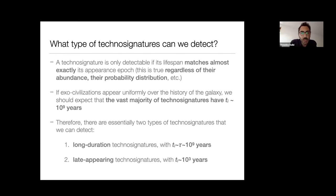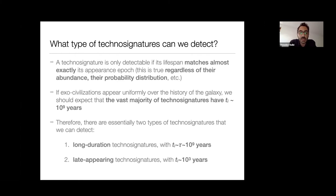Suppose you have some exo-civilizations spread uniformly over the history of the galaxy. Then you should expect the vast majority of technosignatures to have a time of appearance Ti of the order of a billion years or so. Using this filter, you're either getting very long duration technosignatures — with Ti and tau of the same order of magnitude, around 10 to the 9 years — or you are picking up technosignatures that appeared very close to our own appearance, meaning they are coeval to us, with Ti of the order of 10 to the 3 years.